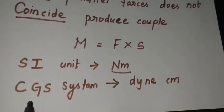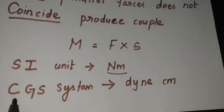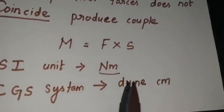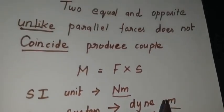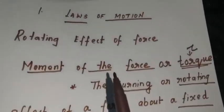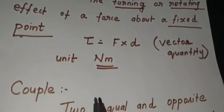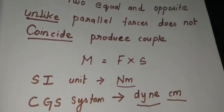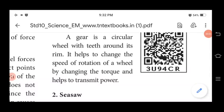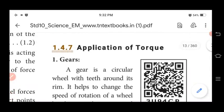The unit for couple is newton meter. In the CGS system — centimeter gram second — the unit is dyne centimeter. Up to this we covered in our last online class. Today we are going to learn our remaining topic: application of torque. Torque is nothing but the rotating or turning effect of force.